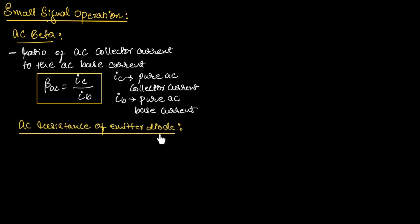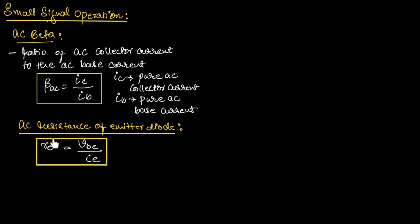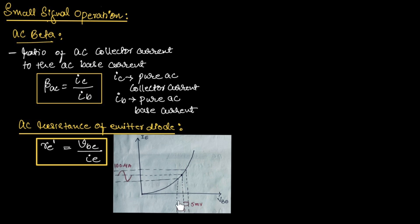Now let us understand the AC resistance of the emitter diode. The emitter diode is the region between base and emitter. The AC resistance across the emitter diode is given as RE' (RE dash), which equals small VBE divided by small IE. The dash notation indicates that the resistance is inside the transistor. Here small VBE is the AC base-to-emitter voltage and small IE is the AC emitter current. This figure shows that small signal variation across VBE causes small signal variation across IE, producing non-distorted output.